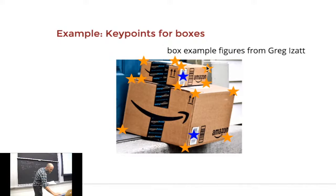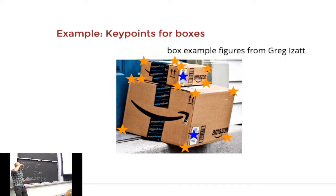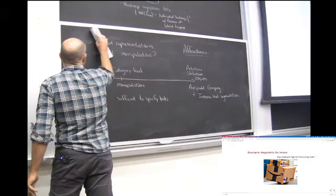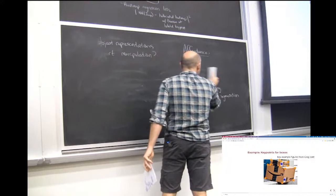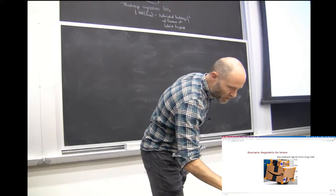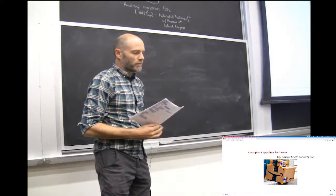Greg was doing a thought experiment with Maggie Wang about what it would look like to use key points to reason about boxes. He had a bunch of boxes in his apartment during COVID and was pointing his depth camera at piles of boxes, asking: could I estimate shapes and poses of boxes given a key point type network? He put yellow dots at each of the corners — maybe you want to know where the label is or something like that. It seems totally reasonable to output from the network. But it starts to get into some subtleties.